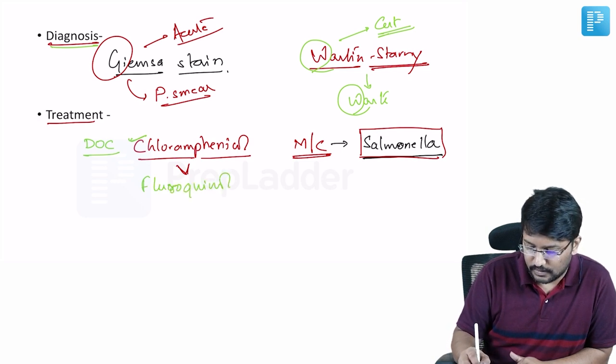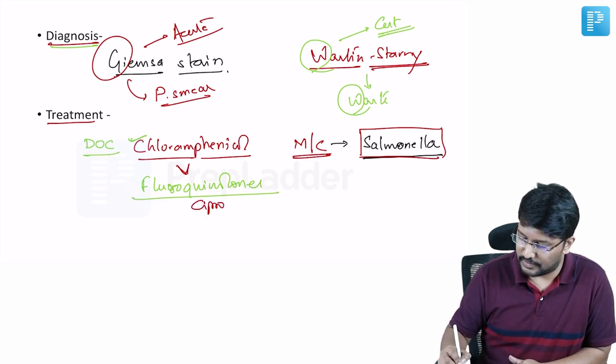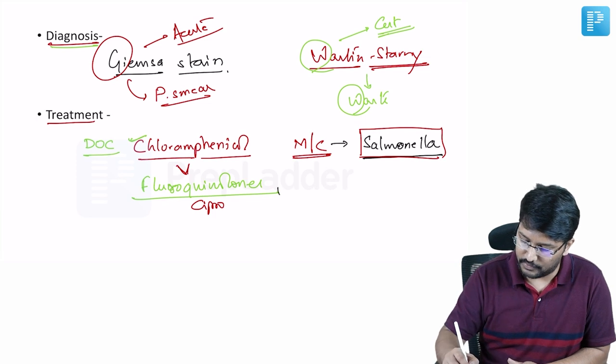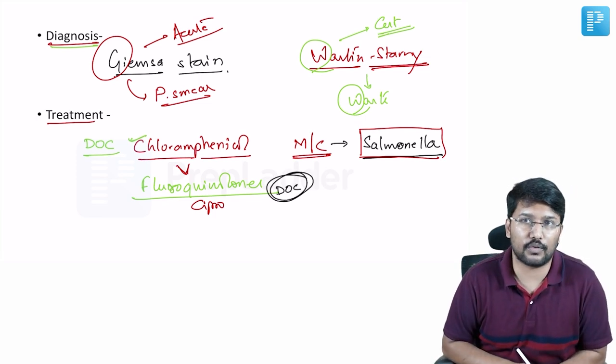The preferred drug is now, we don't prefer chloramphenicol anymore. We prefer fluoroquinolones like ciprofloxacin. Fluoroquinolones like cipro is a preferred thing. So I would say if you have to pick up as a drug of choice, I would say pick up fluoroquinolones. No longer we are considering using chloramphenicol.